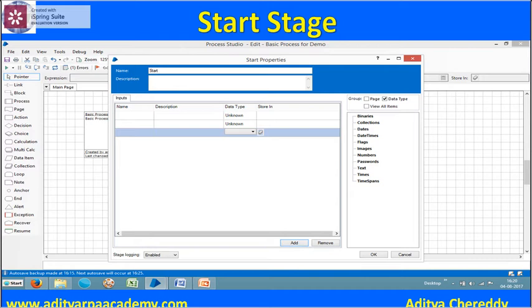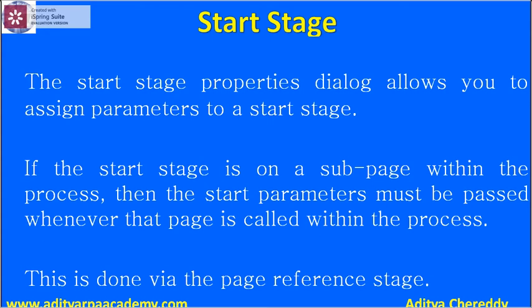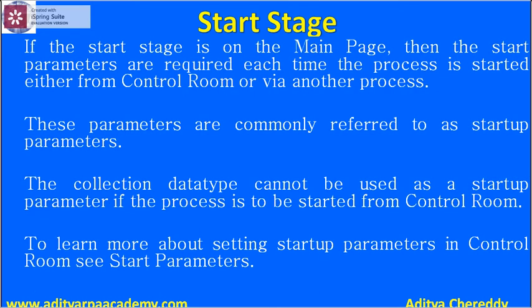On the right hand side you can see the data types. The start stage properties will allow you to assign parameters to your start stage. If the start stage is on a sub page within the process, then the start parameters must be passed whenever the page is called within the process. This is done via the page reference stage. If the start stage is on the main page, then the start parameters are required each time the process is started, either from a control room or via another process. These parameters are commonly referred to as startup parameters.